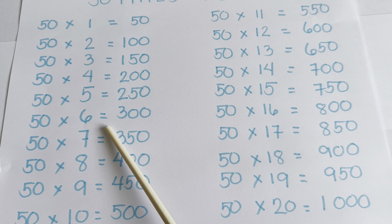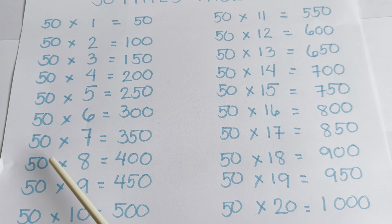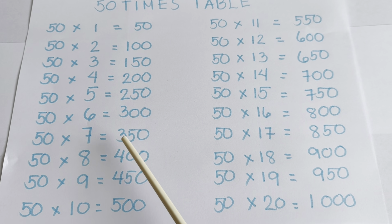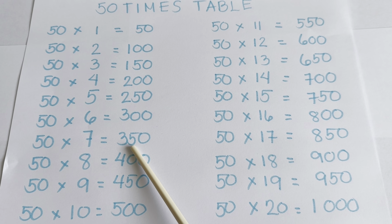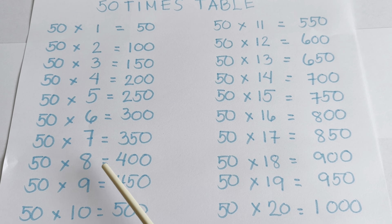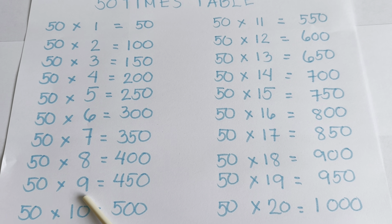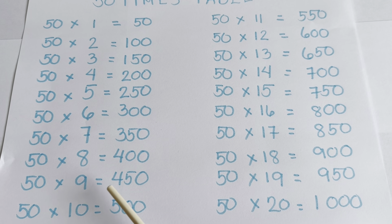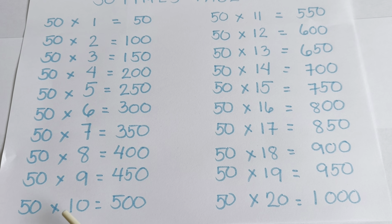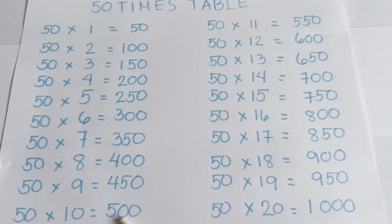50 times 6 is equal to 300. 50 times 7 is equal to 350. 50 times 8 is equal to 400. 50 times 9 is equal to 450. 50 times 10 is equal to 500.